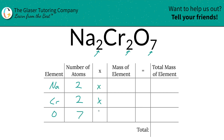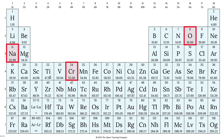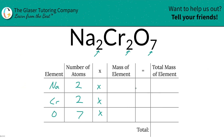Then we're simply going to multiply those number of atoms by the mass of each element. These masses are always found on the periodic table. Sodium's mass is 22.99, chromium is 52, and oxygen is 16. So that's what we're going to write down: 22.99, 52 for chromium, and 16 for oxygen.